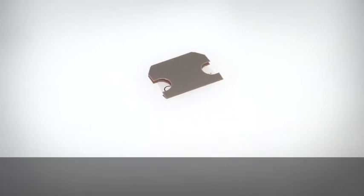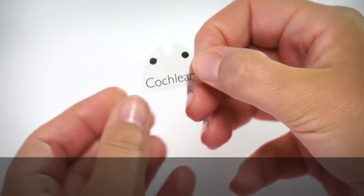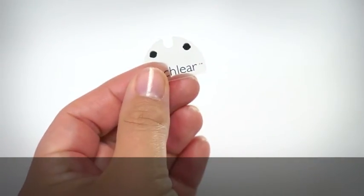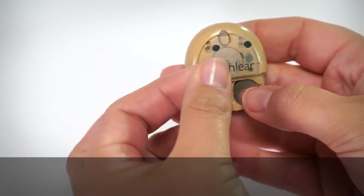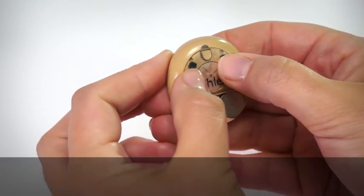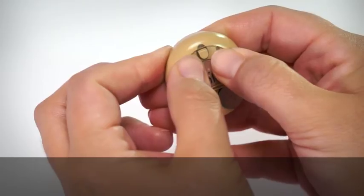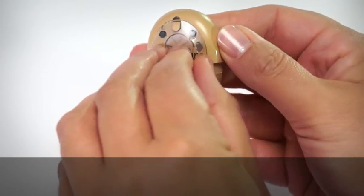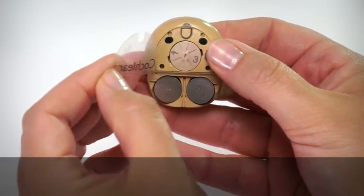To insert new microphone protectors, pull the Kanso microphone protector applicator out of its sleeve. With the microphone protectors facing down, lay the applicator over the processor, aligning the protectors over the microphones. Press the microphone protectors down with your finger. Remove the applicator carefully by peeling it upwards from the side.